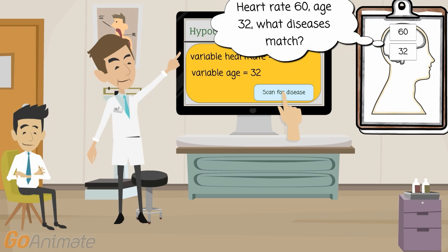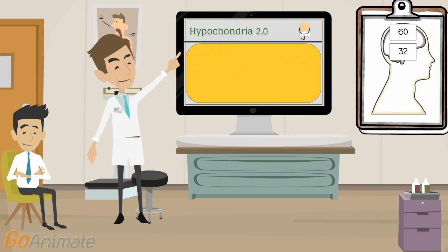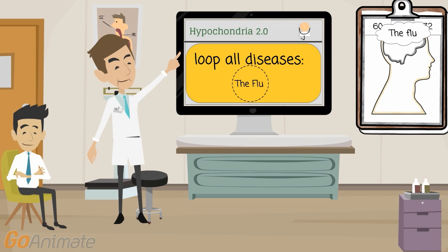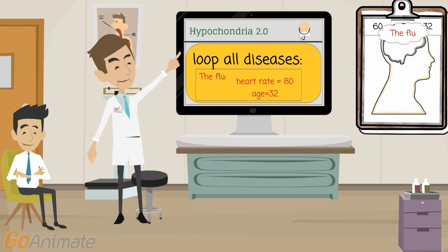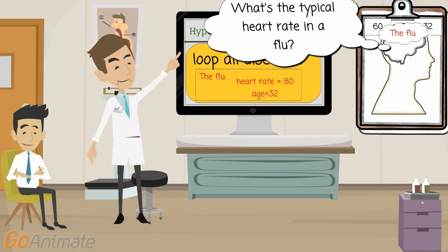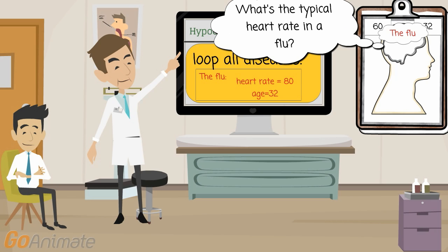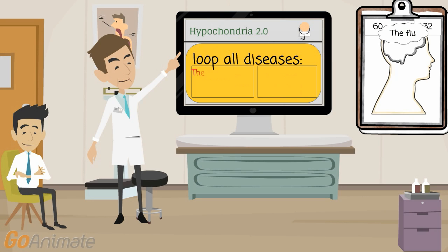Then the program would scan through different diseases and see if the symptoms match one or more diseases. For doing this, you would start a so-called loop. The loop would go through all the possible diseases, and the patient's symptoms would be checked against the symptoms of every disease.